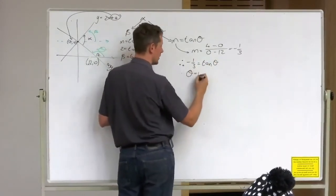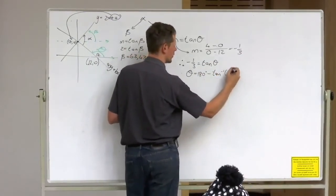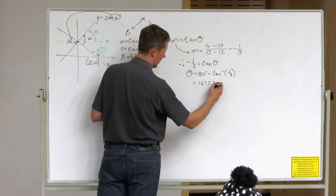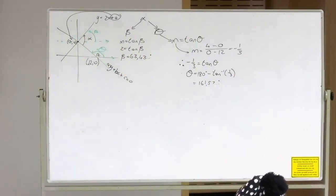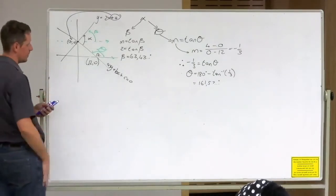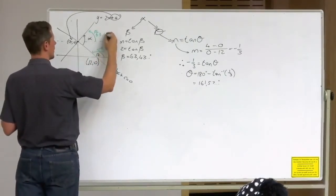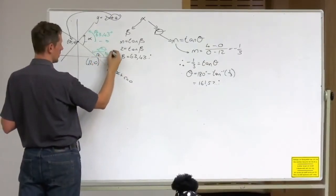So theta is 180 minus arctan of one-third. This gives me about 161 comma 5, 7, 5, 7 dot dot dot. I just know this because I've done this thing like a hundred times. But now the thing is, guys, I have beta as being 63.43. I have theta being 161.57.